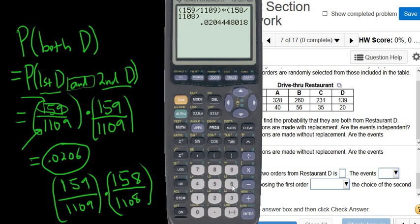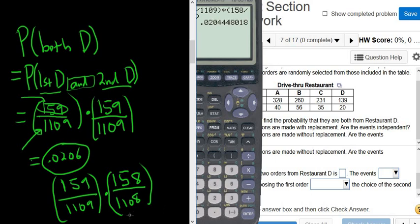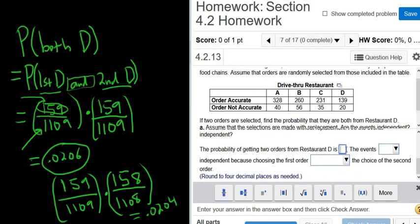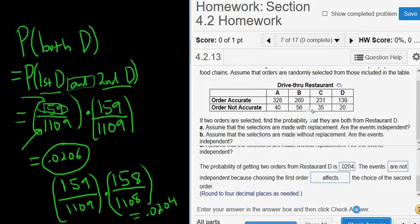So 0.0204. I'm going to be careful here. So 0.0204. And these would not be independent events. These are dependent events. These are dependent events. So the probability is 0.0204. The events are not independent because choosing the first order does affect the choice of the second order. That should be okay.